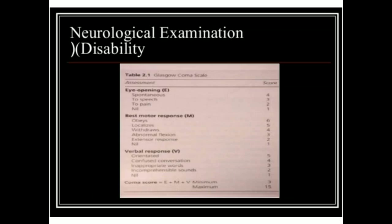Neurological examination is done by the Glasgow Coma Scale. It assesses eye opening, best motor response, and verbal response. The coma score minimum is 3 and maximum is 15 after adding these three components: eye opening, best motor response, and verbal response.